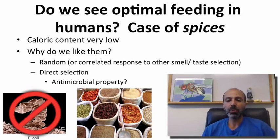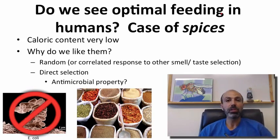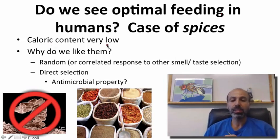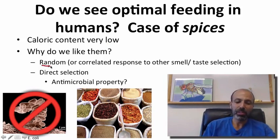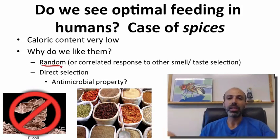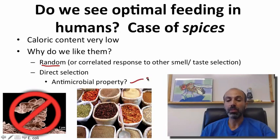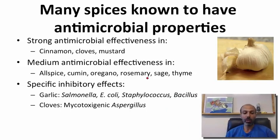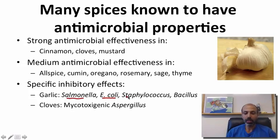A question people often ask is: do we see optimal feeding in humans? There is the case of spices, which have been suggested as a place where humans may be somewhat optimal. The caloric content of spices is typically very low, so why do we like spicy food — why do we like garlic? One possibility is it's just random, or a correlated response to smell or taste unrelated to the spice itself. Another possibility is the antimicrobial properties associated with spices. Many spices are known to have very strong antimicrobial properties: cinnamon, cloves, and mustard have strong antimicrobial effectiveness; allspice, cumin, and oregano have medium effectiveness; and garlic inhibits salmonella, E. coli, staph, and bacillus; cloves inhibit aspergillus.